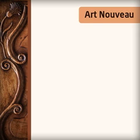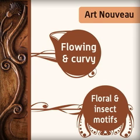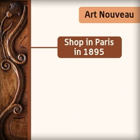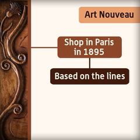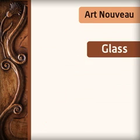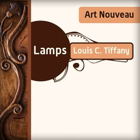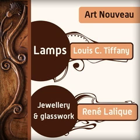The Art Nouveau style is the one that you're most likely to have seen. The designs are flowing and curvy, often using floral or insect motifs. The style took its name from a shop that opened in Paris in 1895, based on the lines of climbing plants and Japanese art. These designs were popular with designers of glass, furniture, fabrics and wrought iron work. The most famous designs were lamps from Louis C. Tiffany and the jewellery and glasswork of René Lalique.